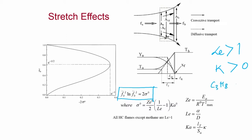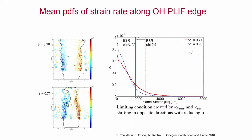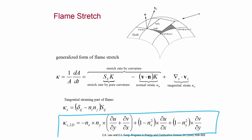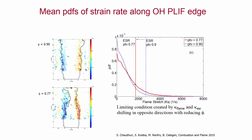If stretch κ is greater than 0, you have heat loss and this kind of extinction behavior for a Lewis number greater than 1 flame. Our flame is a propane-air flame at equivalence ratio φ = 0.77 near blow-off, which has a Lewis number greater than 1. So if it undergoes positive stretch, it can extinguish locally and that can lead to blow-off. We look at the PDFs of strain rate along the OH flame edge.